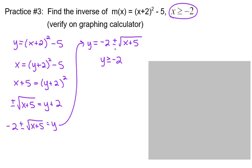So do I keep the plus or do I keep the minus to make it always greater than or equal to negative 2? Negative 2 plus something would definitely be greater than or equal to negative 2, but negative 2 minus something would make it less than or equal to negative 2. So keep the plus, eliminate the minus. You get y equals negative 2 plus the square root of x plus 5. And then step number three is to rename it. So m inverse of x is negative 2 plus square root of x plus 5.